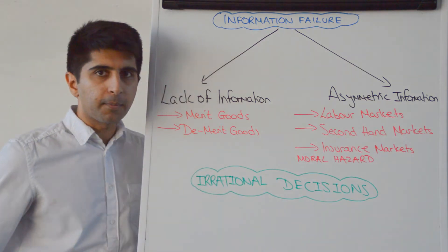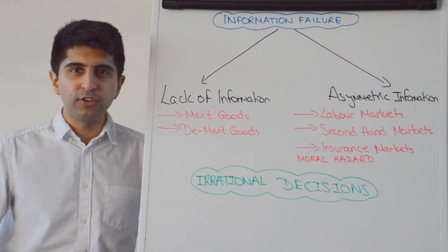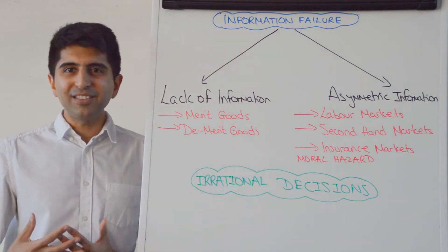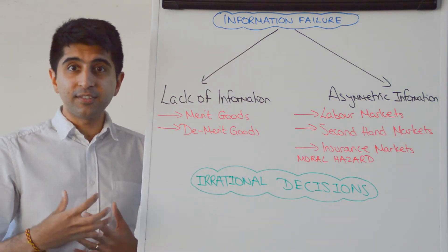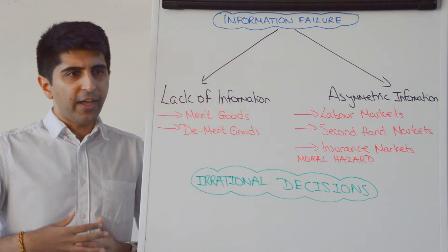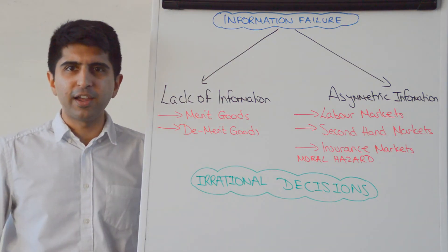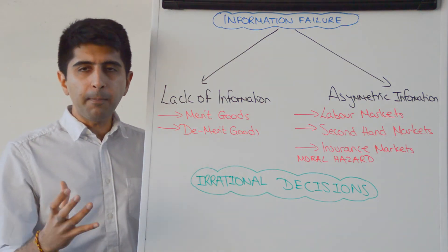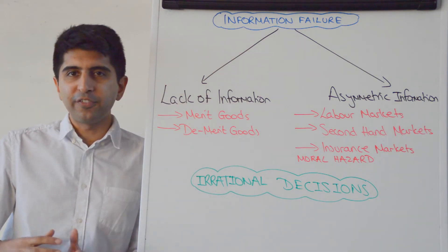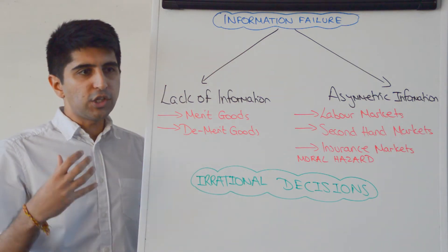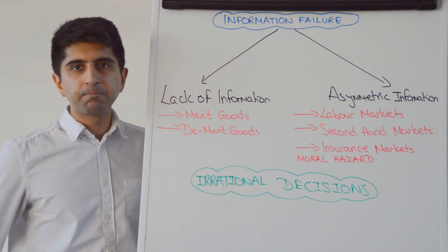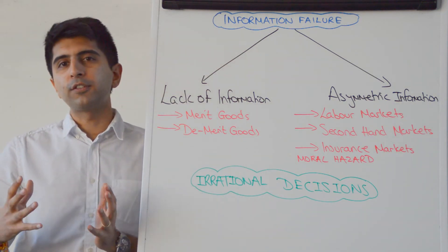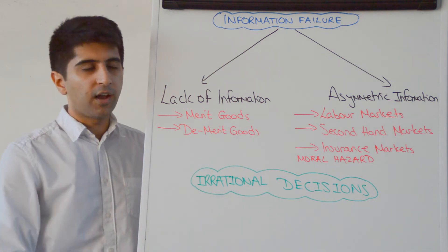But also in insurance markets — who has the information in insurance markets? Well, the person that has the information is the driver, the car owner. That car owner knows just how dangerous a driver they are, but the insurance company doesn't have that information and therefore finds it very difficult to issue a price for that insurance for that individual car driver.